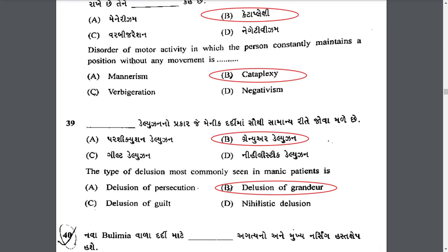The type of delusion most commonly seen in manic patients is delusion of grandeur. Delusion of grandeur means the false belief that the patient has more power, more wealth, more intelligence, or other traits than is actually true.